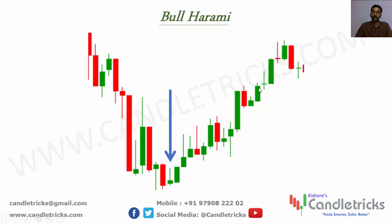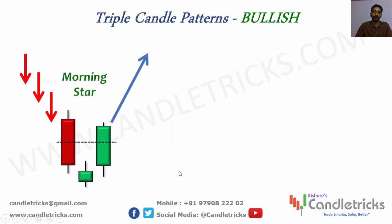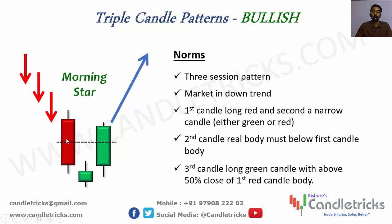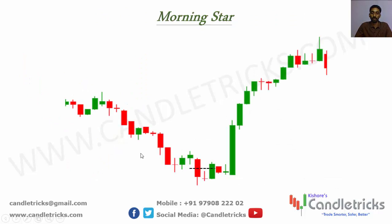Triple candle pattern — morning star: after downward movement, first candle is a long red candle, second candle has a small real body either green or red, and the second candle's body must be outside the first candle's body. The third candle is a long green body and it must close above 50% of the first red candle's body — then it is a morning star. Entry for retailers is above the third candle's high, and it's a true top reversal signal upward.